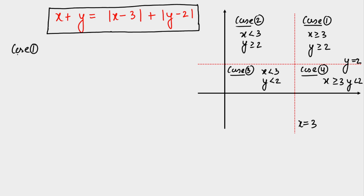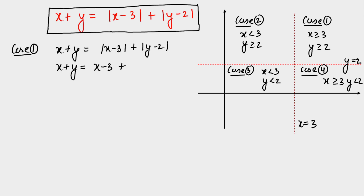Case 1: x ≥ 3 and y ≥ 2. The equation x + y = |x−3| + |y−2| becomes x + y = (x−3) + (y−2), since both mods open positively. Simplifying: x cancels with x, y cancels with y, leaving 0 = −5. So there is no solution in this region.